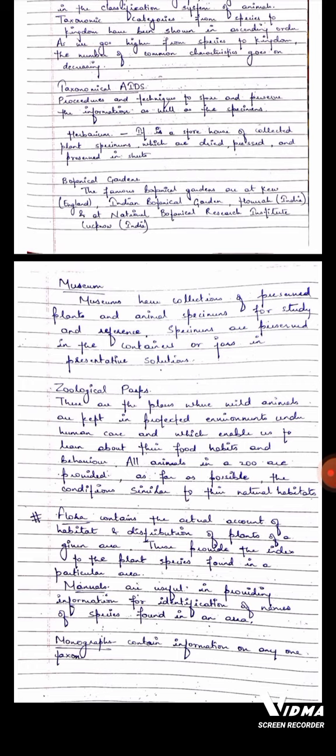Manuals are useful in providing information for identification of names of species found in an area. The last heading is Monograph. Monograph contains information on any one taxon.